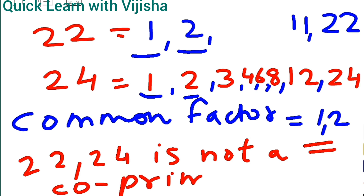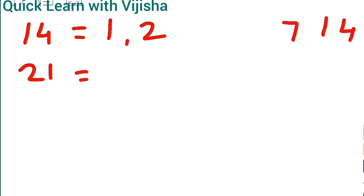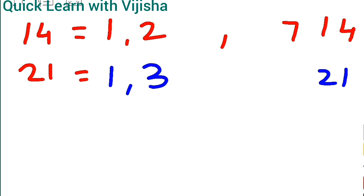Now the second question: 14 and 21. We need to find the factors. For 14: 1 × 14, 2 × 7 — in the table of 3, 4, 5 it will not go. For 21: 1 × 21, in the table of 2 it will not go, 3 × 7 = 21, and no other tables. So the factors for 21 are 1, 3, 7, and 21.